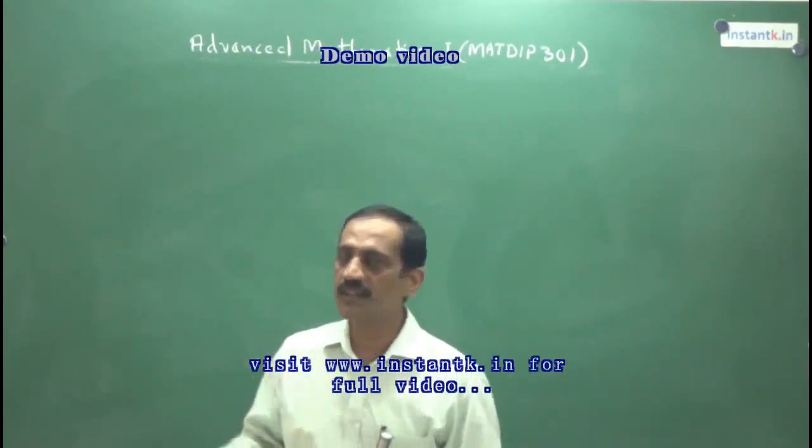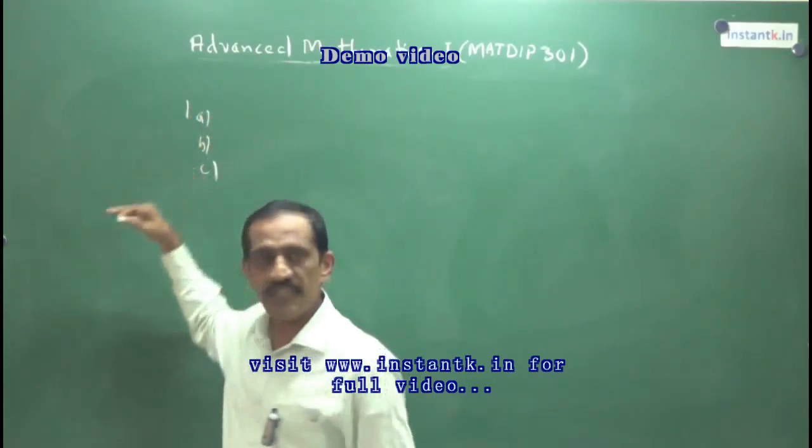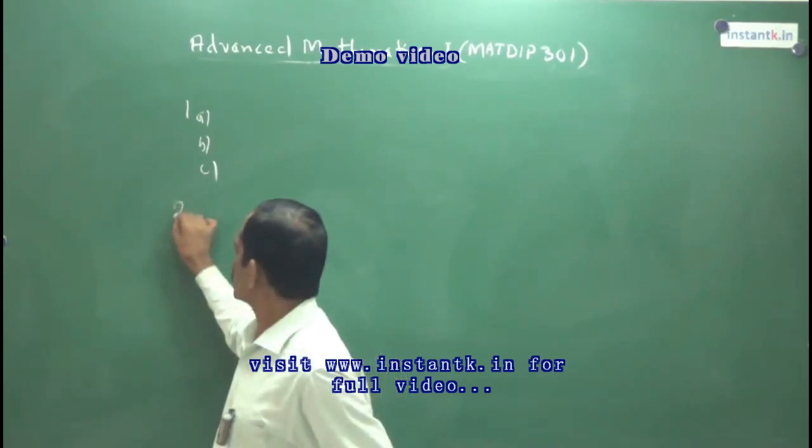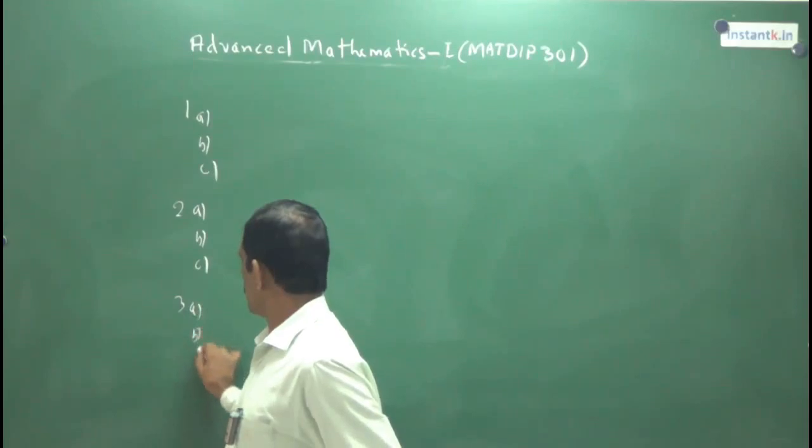In each question there will be 3 subdivisions, like this, first ABC or sometimes ABCD, 4 subdivisions will be there. And second question also, there is ABC, and third question also ABC, like that.